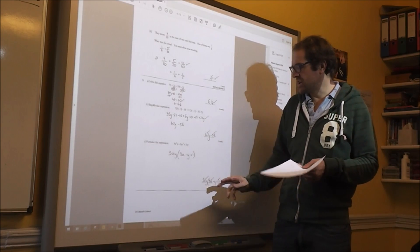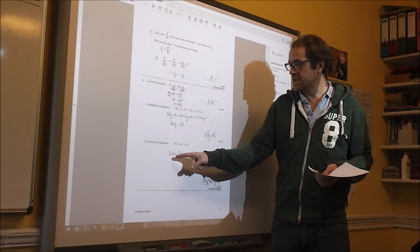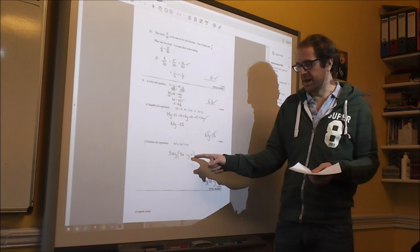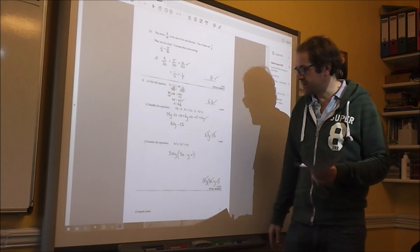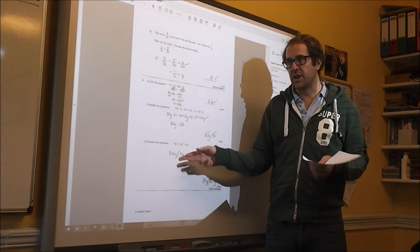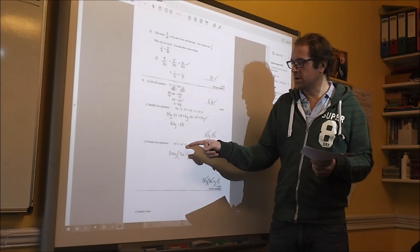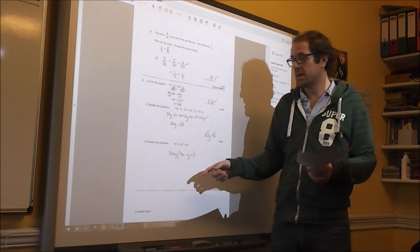Factorise the expression. Remember to factorise it fully. So the largest you can take out is 3xy. And then that leaves 3x minus y plus 1 inside the brackets. And it's always worth checking with these ones that if you multiplied it out, you would actually get what you factorised in the first place, especially the three marks. So check it.